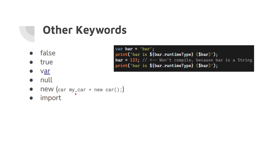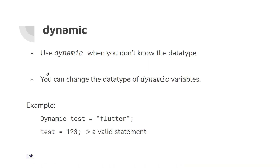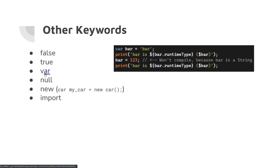Other keywords that are obvious and don't need much explanation: 'false' and 'true' are binary; 'null' means empty; 'new' is now optional in Dart when creating an object — you can say new or remove it; 'import' is used to import libraries; 'var' is like dynamic but with a difference — you cannot change the type once assigned. For example, 'var bar = "bar"' makes bar a String, and assigning an integer later gives an error. Unlike dynamic, var does not allow type changes. I hope this was helpful — thanks for watching!